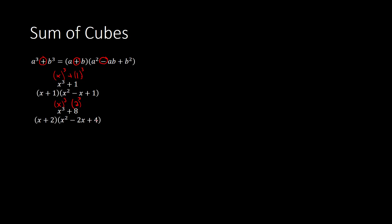Here is another example where we have x cubed, and here we have a 3 cubed. Same thing — instead of a and b, we have x and 3. So I have x plus 3, and then x squared, and then 3 times x, and then 3 squared, which would be 9. So this would be the factored form of x cubed plus 27.